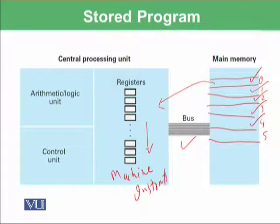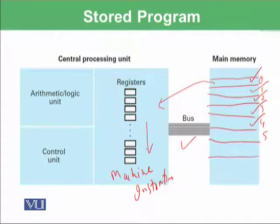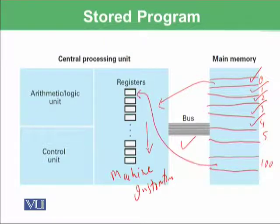That machine instruction is decoded to understand what it means and what this program wants to do. For example, the first instruction was to get data from RAM. The data would be somewhere in memory — say at position 100. This instruction will fetch that data to one of the registers, and so on.